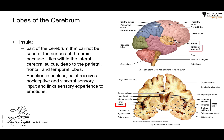Insula means island. Its function is still being investigated, but many textbooks attribute to it functions like visceral sensation, taste, and balance. In this coronal section — cutting the brain and looking at it from the side — you can see the longitudinal cerebral fissure, the corpus callosum, and the lateral sulcus on each side. If you separate the lobes apart, you will be able to see the insula.